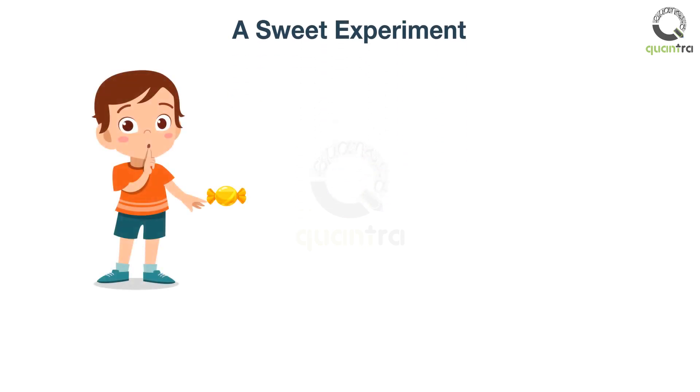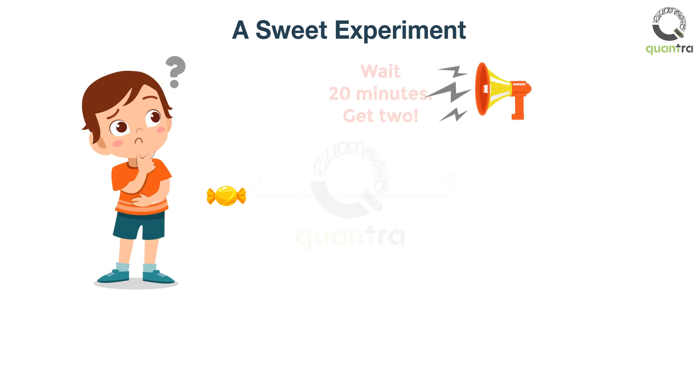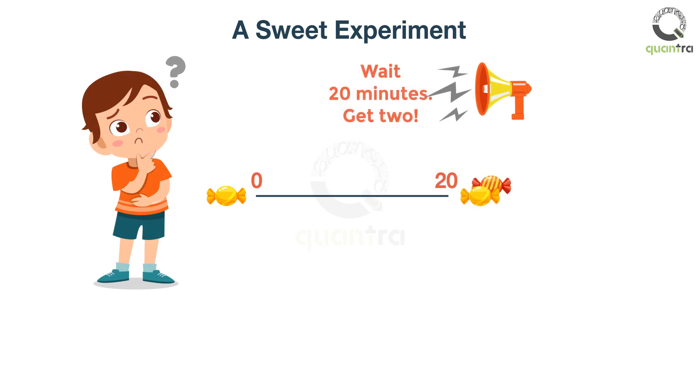Let us consider the Delayed Gratification Experiment. A sweet is put in front of a child, and the child is told that if it abstains from eating the candy for say 20 minutes, it will receive two candies later.